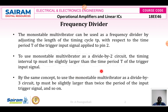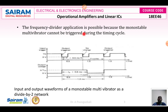If I want divide by 3, then my output time period of the monostable multivibrator must be larger than the time period of the input signal. We say that TP must be slightly larger than twice the period of your input trigger signal to use this 555 timer as a frequency divider. The frequency divider application is possible because the monostable multivibrator cannot be triggered during the timing cycle. When the trigger input signal goes less than 1/3 VCC, then the output of the monostable multivibrator goes to the high state.